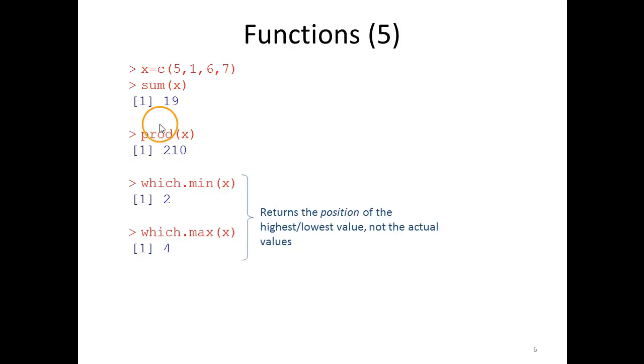Which.min and which.max are interesting functions. They don't give you the lowest and the highest value, which was what you got if you use the min and max functions, but they rather tell you in what position these are. So which.min x gives you 2 because the lowest value in the vector x is situated in position two of the vector.